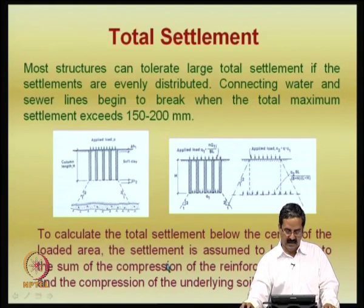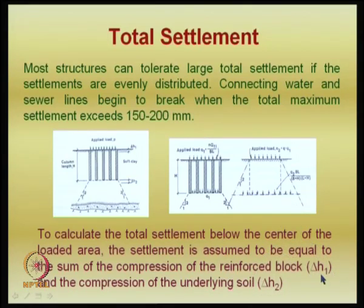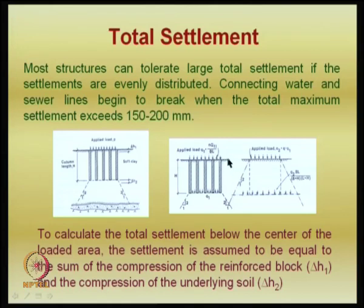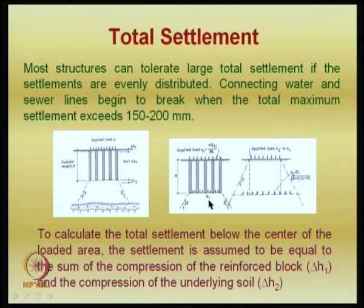What we want to do is calculate the reinforced block delta H1 settlement and also the compression of the underlying soil. Because of the applied load, there are two components: delta H1 and delta H2. The load applied on the block area B×L is Q1, and we assume Q1 also acts here. The remaining load Q2 is Q minus Q1, which gets distributed below.